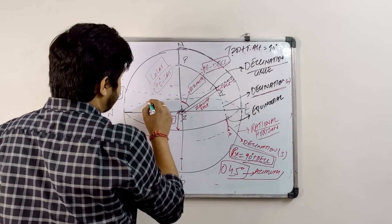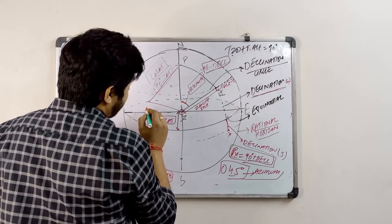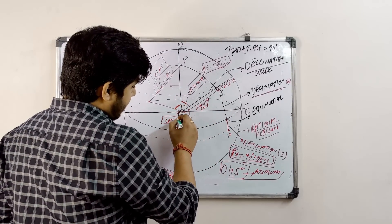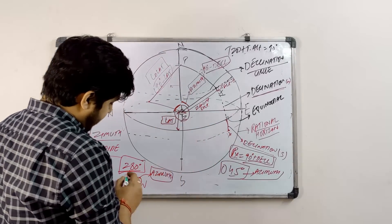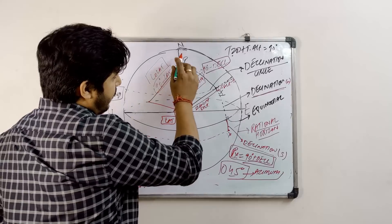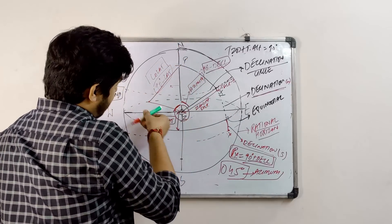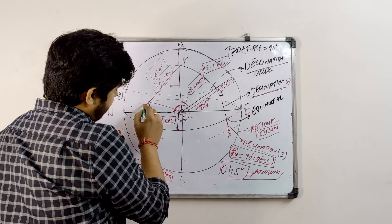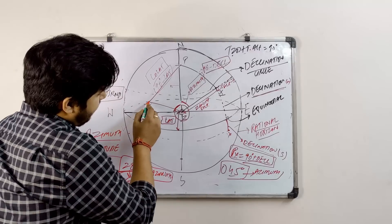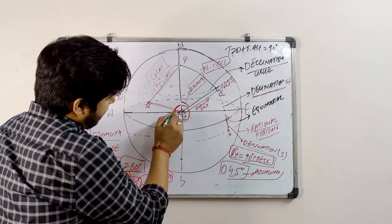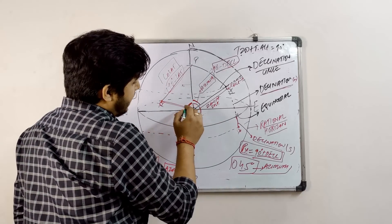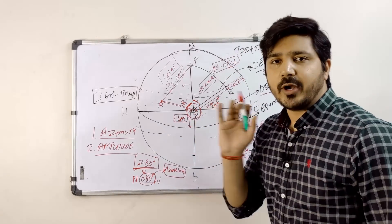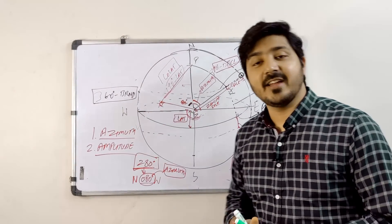Let's say the body is on the west side. Angle Z will be the azimuth. If a body like the sun is at bearing 280, that means north is here and 280 places the body here, so the angle from north to the body is 280 degrees — but in quadrantal form, angle Z will be 80 degrees. That is the azimuth of the body.